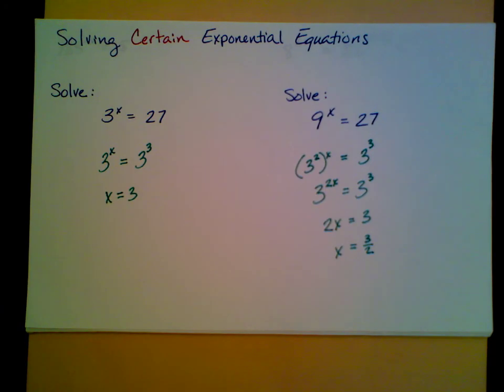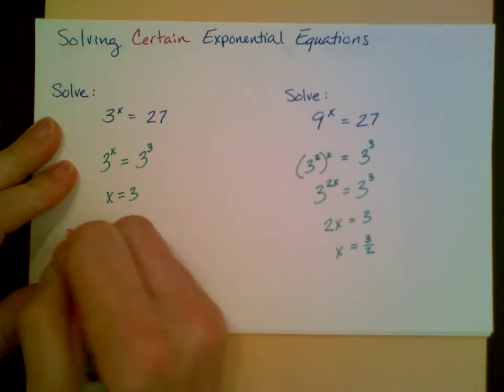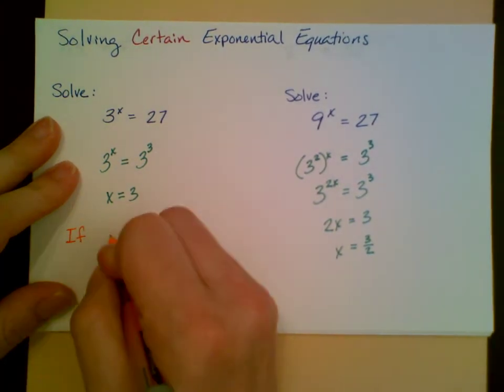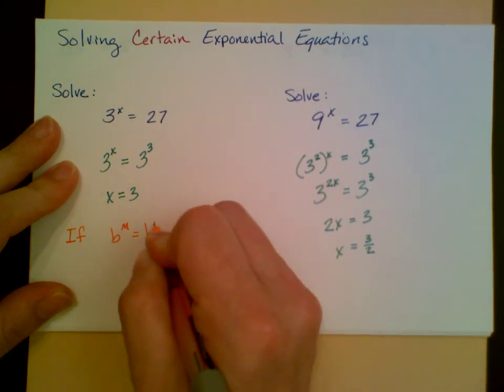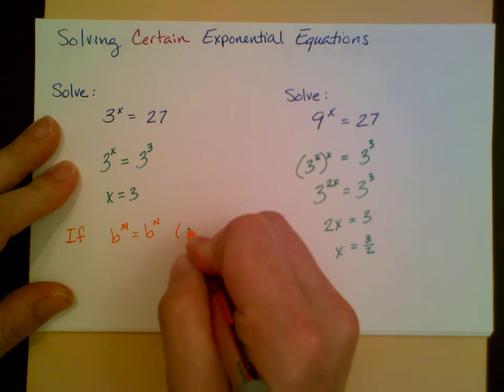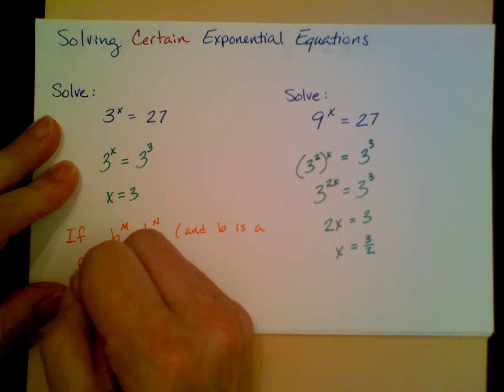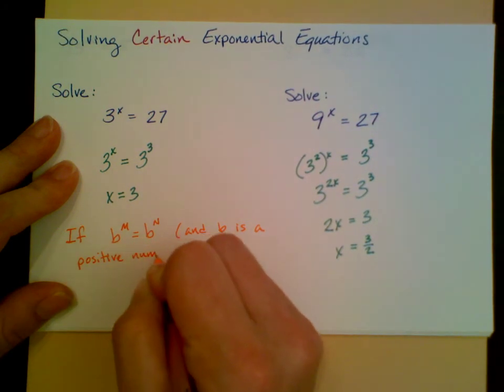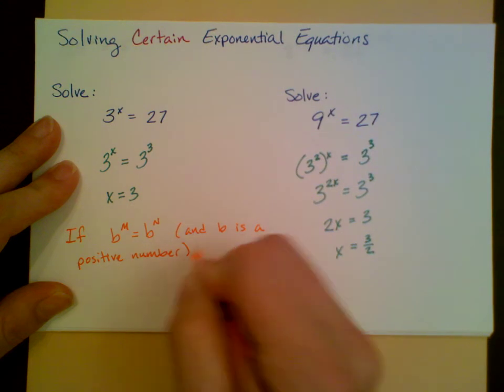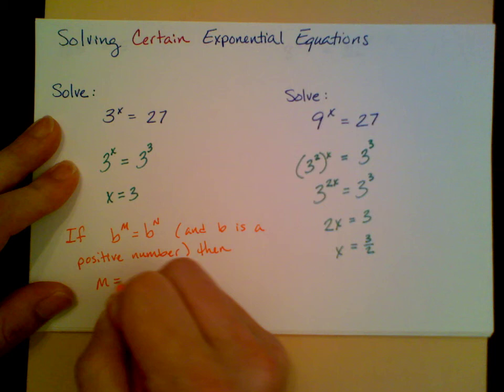The rule that I'm using here is if b to the m equals b to the n, and b is a positive number, then m equals n.